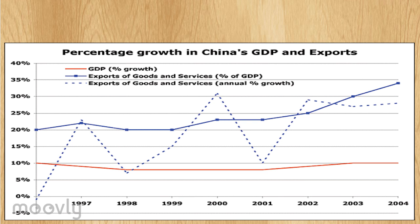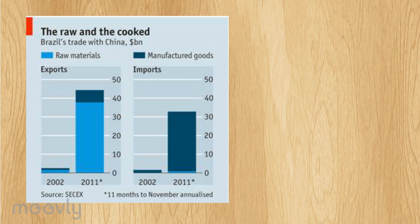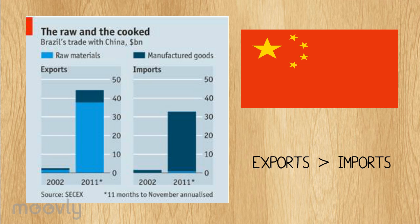Due to the Chinese having a weaker currency, their exports are relatively cheaper than Brazil's. Therefore, more people buy Chinese products, indicating a current account surplus for China, because their exports exceed their imports.